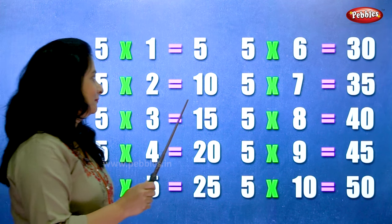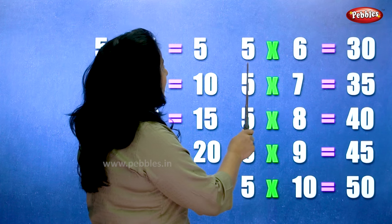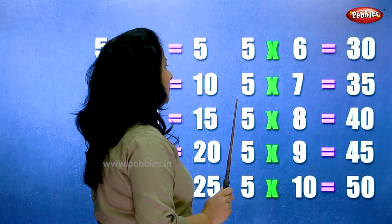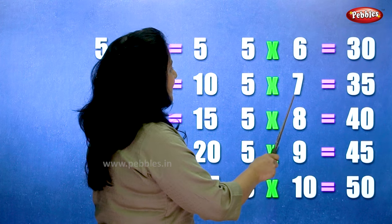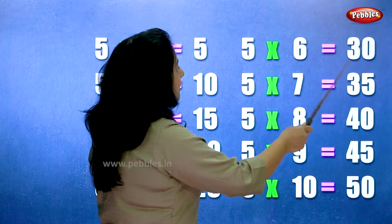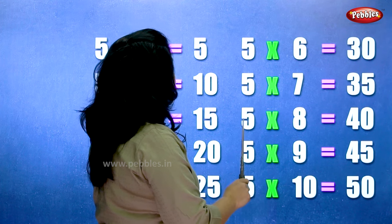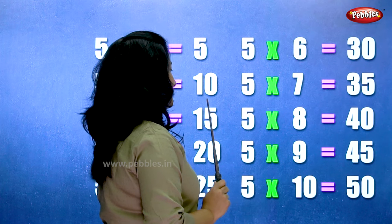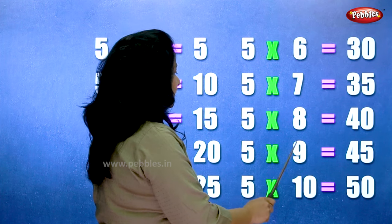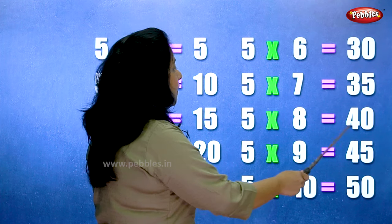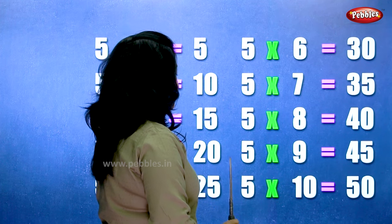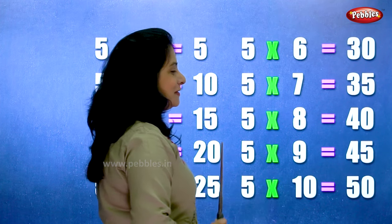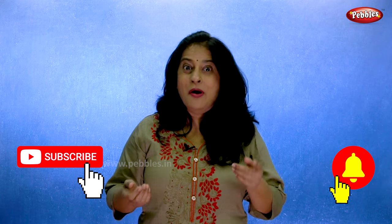5 sixes are 30, 5 sevens are 35, 5 eights are 40, 5 nines are 45, 5 tens are 50. Thank you for watching the video.